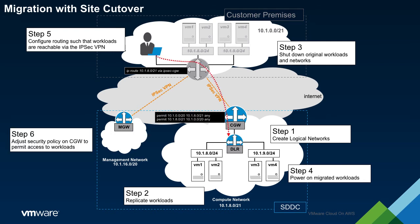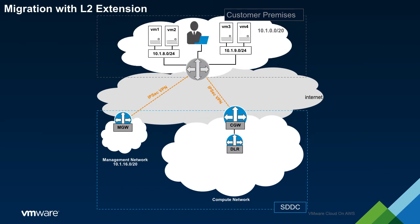The SDDC is now the active site. A common requirement is that workloads retain their IP addresses post-migration to the SDDC. However, the notion of a full site cutover in a single maintenance window is often impractical. In these cases, a different approach to migration is required.